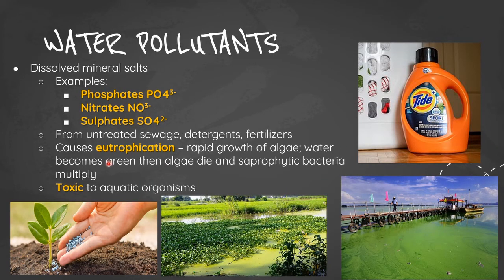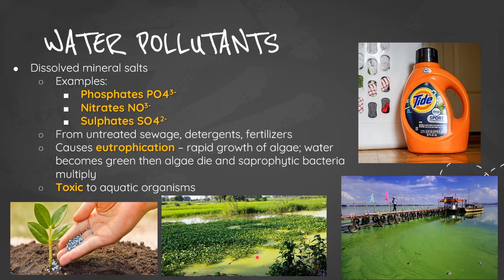Mineral salts such as phosphates, nitrates, and sulfates from untreated sewage, detergents, and fertilizers cause eutrophication. Excessive nutrients are flushed into rivers or lakes by rainwater, causing aquatic plant growth and algae blooms. The water becomes green, then algae die and saprophytic bacteria multiply, using up oxygen. These dissolved mineral salts are also toxic to aquatic organisms.